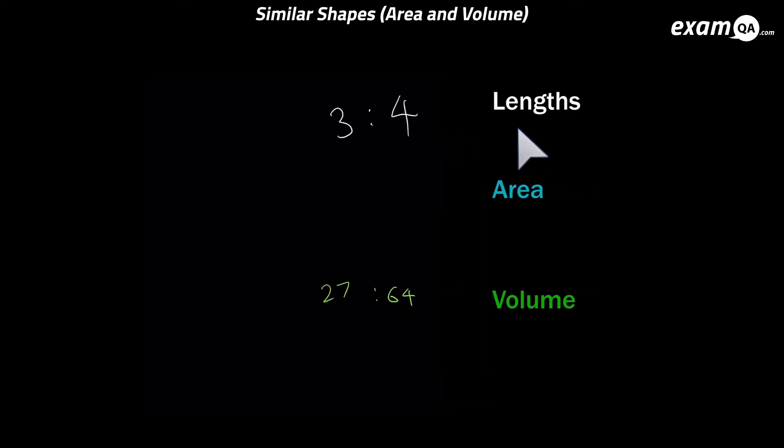But that's not what we wanted. We wanted the area ratio. But once we've got the length ratio we can get to the area ratio. And how do we do that? We square the length ratio. So squaring 3 gives us 9, and squaring 4 gives us 16. So from the volume ratio we managed to get the area ratio.